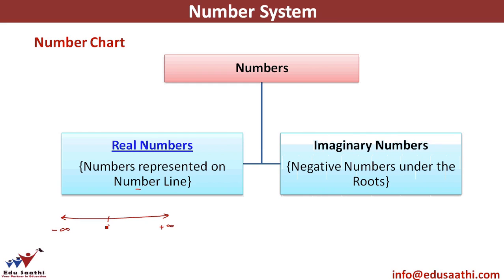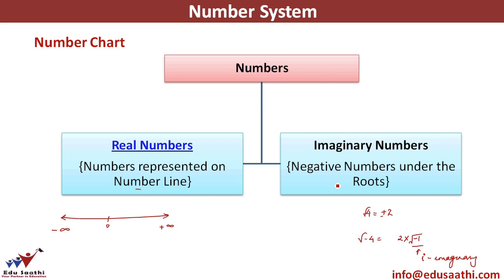Imaginary numbers are numbers that cannot be represented on the real number line. The square root of a negative number is not possible on the real number line. For example, the square root of 4 is plus or minus 2, but the square root of minus 4 can be written as 2 times the square root of minus 1. This square root of minus 1 is referred to as iota and is an imaginary number. Any nth root of a negative number is imaginary.